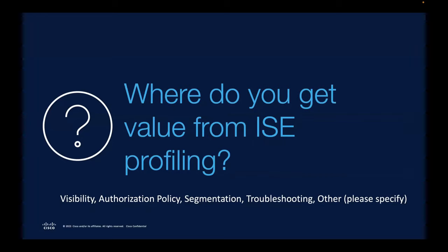Finally, where do you find yourself getting value from profiling? Options include visibility and understanding what's on the network, using profiles in authorization, tags and segmentation, or troubleshooting. Results show visibility and segmentation are essentially tied for the lead, with authorization policy close behind. That all makes sense, and we're going to get right down into how to actually profile and continue to reduce those unknowns.